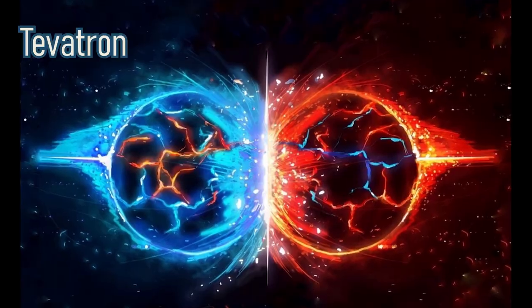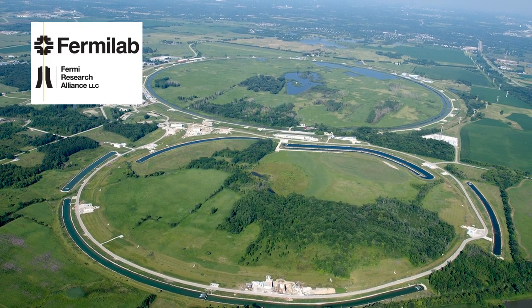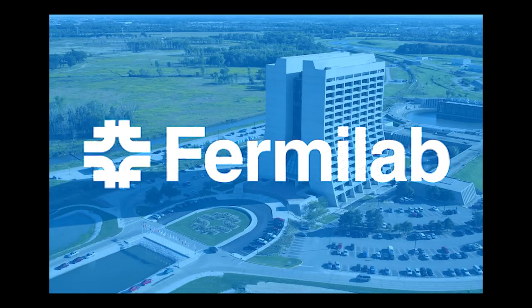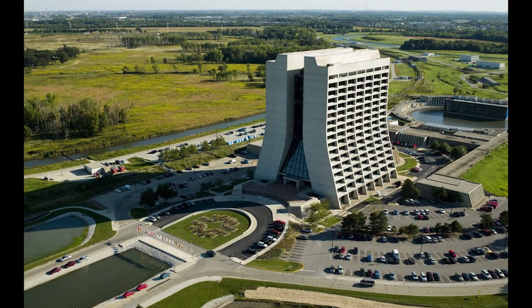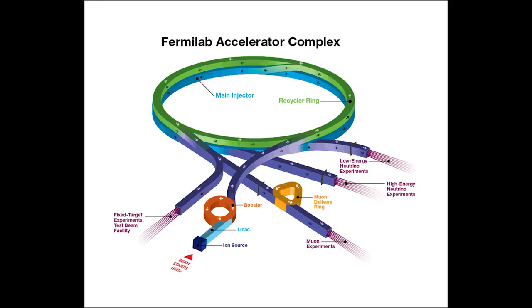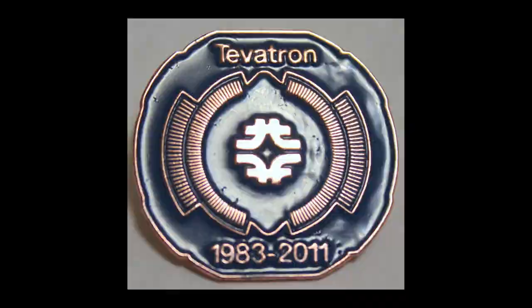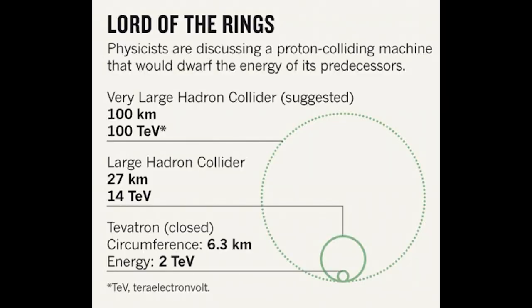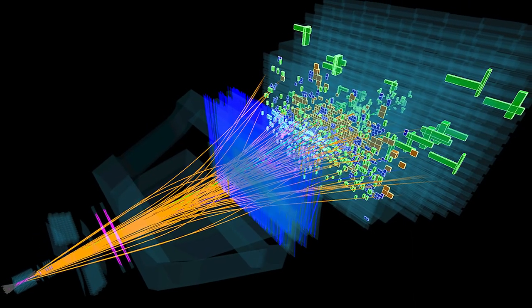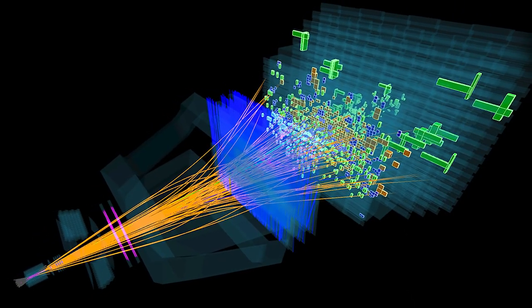The Tevatron was a particle accelerator located at the Fermi National Accelerator Laboratory, Fermilab, in Batavia, Illinois, United States. It was in operation from 1983 to 2011 and was the world's highest energy accelerator for more than two decades. The Tevatron ceased operations on September 30, 2011, due to budget cuts and because of the completion of the Large Hadron Collider, which began operations in early 2010 and is far more powerful, having two 7 teraelectron volt beams compared to the Tevatron's one teraelectron volt beam.